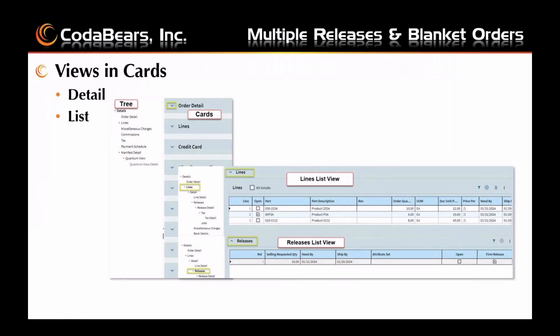The previous slide showed the detailed view of the header, line, and release. Here we can see the list view of the lines and the releases by selecting in the tree the lines area and the releases area. If we click line detail or release detail in the tree, or by clicking a blue highlighted item, you can use the hyperlink to get to the individual line or release, and then see the details for each line or release respectively.